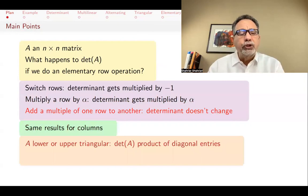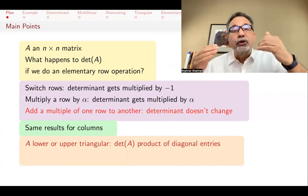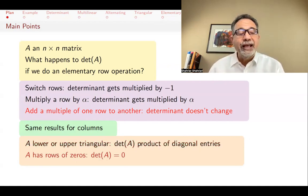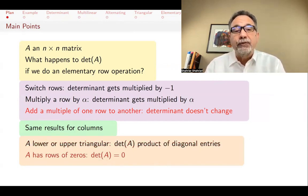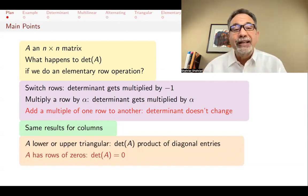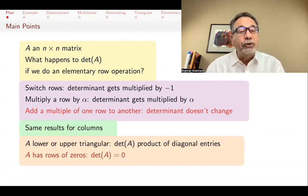We also note that for a lower or upper triangular matrix — a matrix whose entries above or below the diagonal are all zeros — the determinant is the product of the diagonal entries. And if a matrix has a row of zeros, the determinant of A is zero. These combined together allow us to calculate determinants: do elementary row operations until you get a triangular matrix, then find the determinant.